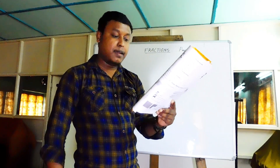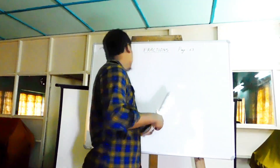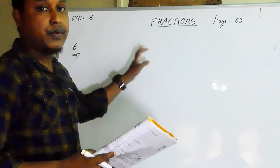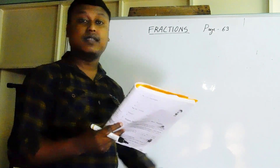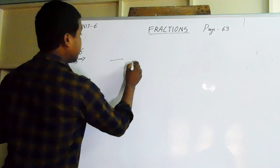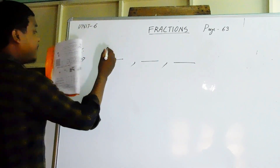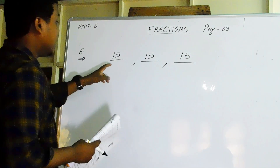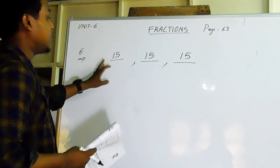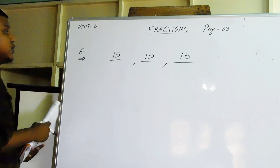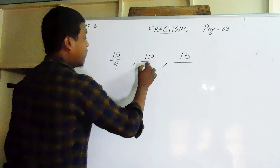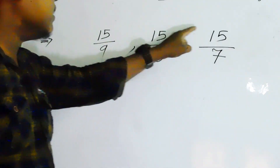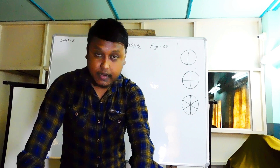Question number six: write 3 improper fractions with numerator 15. Here the numerators all need to be 15. For the fractions to be improper, the denominator must be less than the numerator. So we put 15 as the numerator and choose denominators smaller than 15: 9, 8, and 7. The answer is 15/9, 15/8, and 15/7 — three improper fractions with numerator 15.